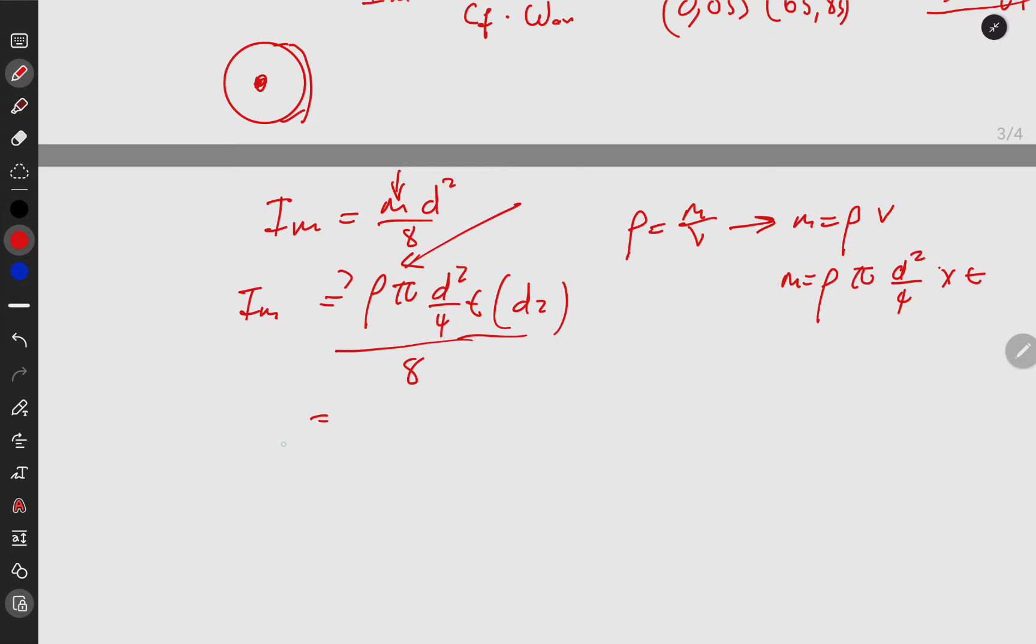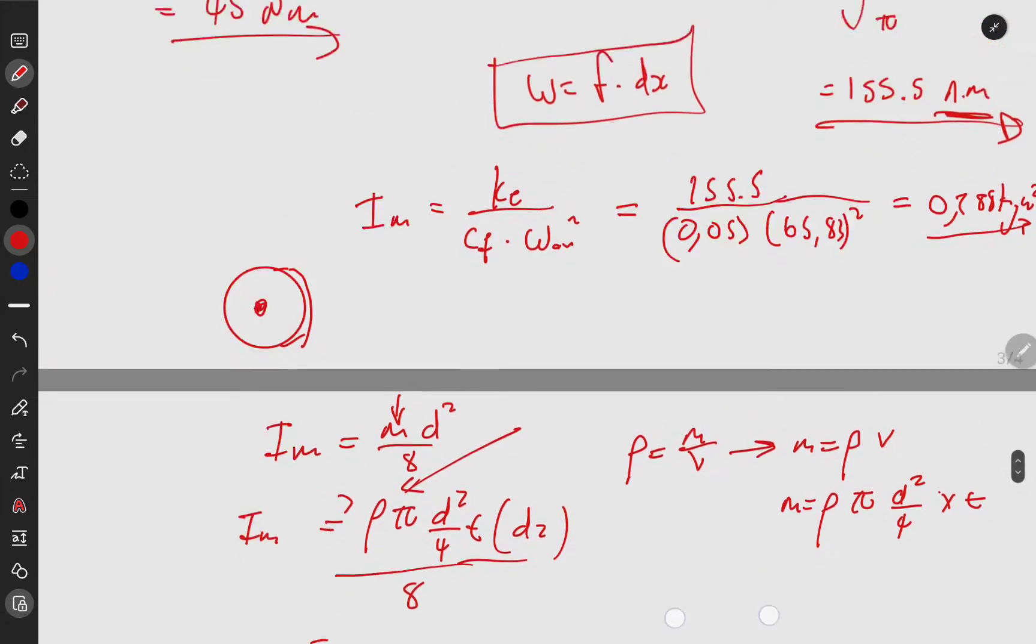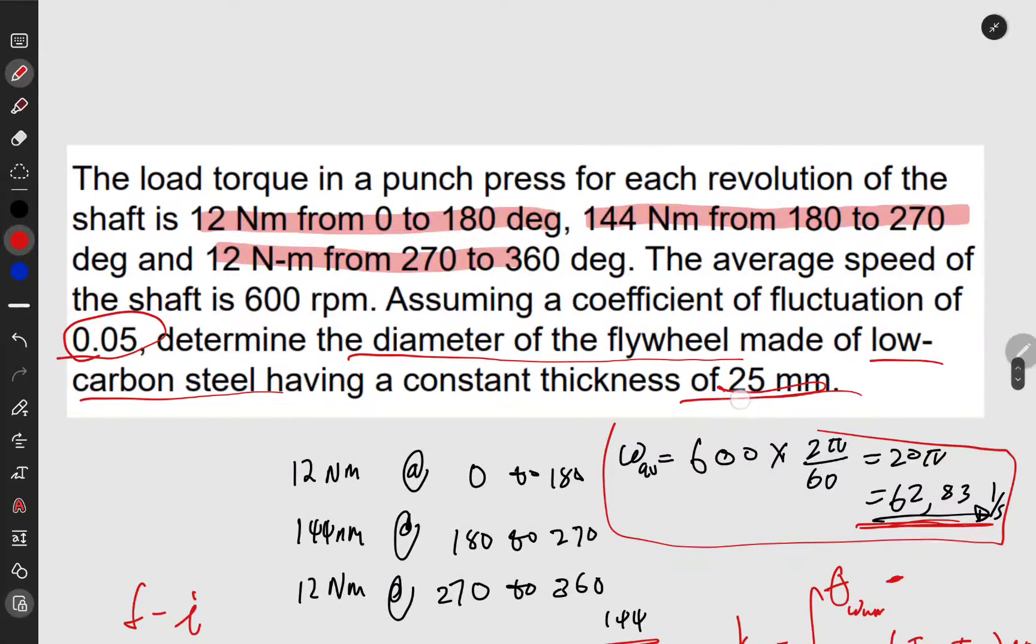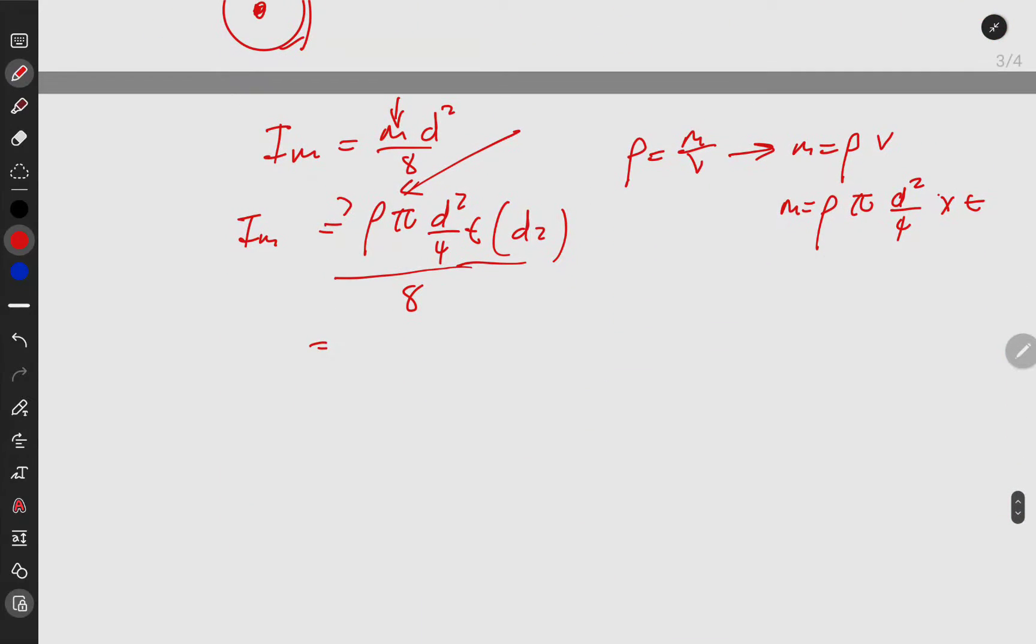They gave us thickness, so you plug in your thickness here. We know inertia but don't know d, so we solve for d. If you did it very well, you get 449 millimeters. There we go.